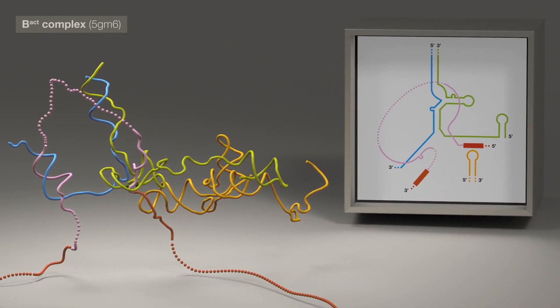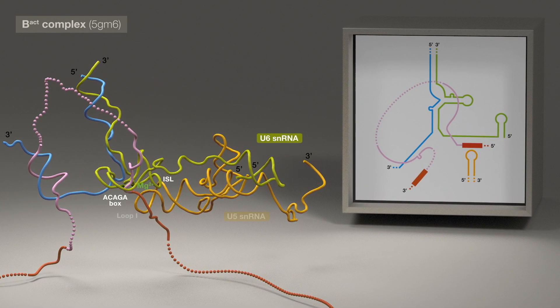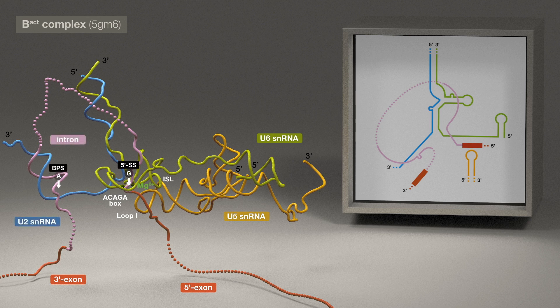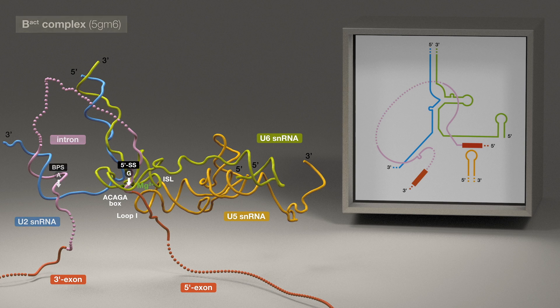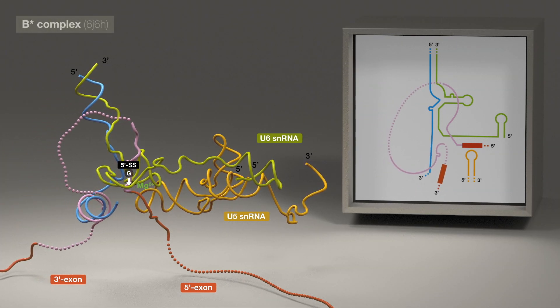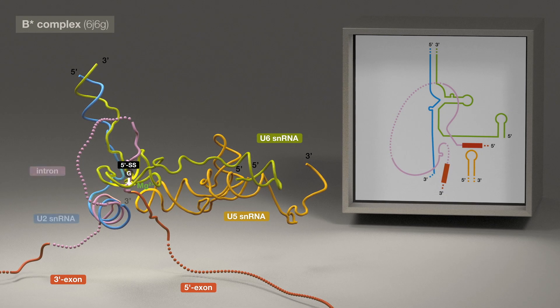At the 5' end, nearby U6 and U5 RNA elements prepare to anchor the 5' splice site and exon. At the 3' end, the BPS reactant is brought closer but is held sequestered by U2 RNA. During the transition from B-act to B-star, RNA remodeling is again dramatic and stepwise, as movement of intron U2 duplex directs the BPS nucleophile into the active site.